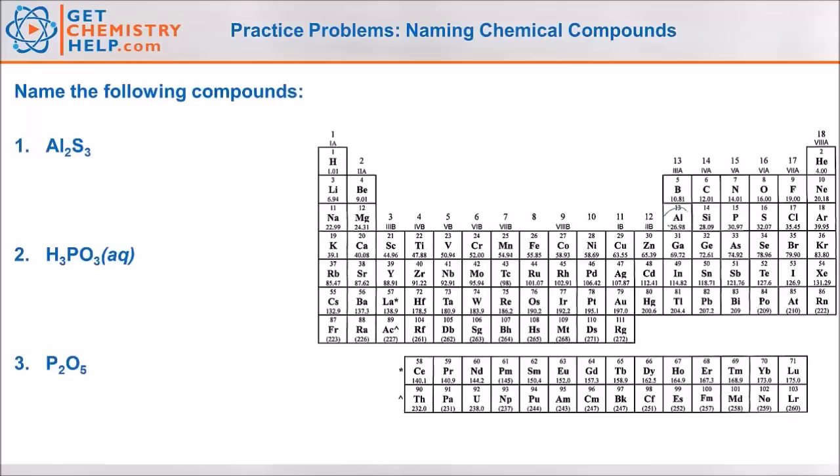Let's find Al. That lives over here and S lives over here. So this would be ionic, molecular, or an acid.